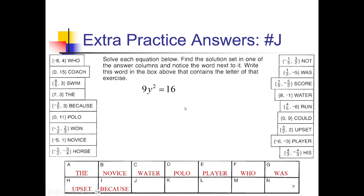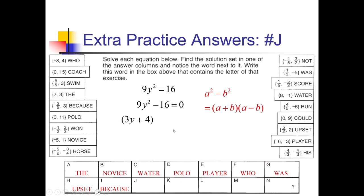Problem J is a little bit interesting — it's breaking the mold of the last few problems. When we subtract 16 to get this in standard form, I notice I've got two perfect squares with a minus between them. So I can use the a squared minus b squared shortcut: that's equivalent to (a plus b)(a minus b). Square root of 9y squared is 3y, and square root of 16 is 4. So we have 3y plus 4 and 3y minus 4. Setting each equal to 0: the first gives negative 4 over 3, and the second gives positive 4 thirds — so plus or minus 4 thirds. That's 'his,' so j is 'his.'